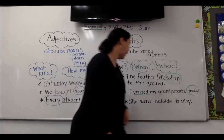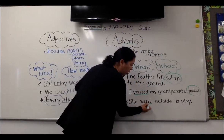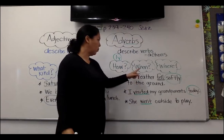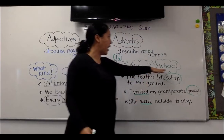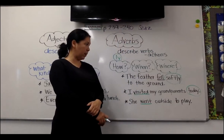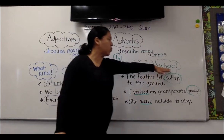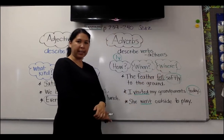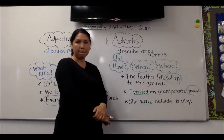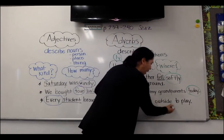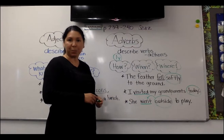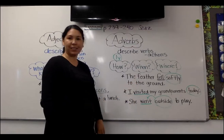Number three: She went outside to play. Went is my verb — that's my action. How did she go, when did she go, or where did she go? Do you see a word that's describing? It's where. Where did she go play? Outside. Outside is my adverb describing where she went to play.